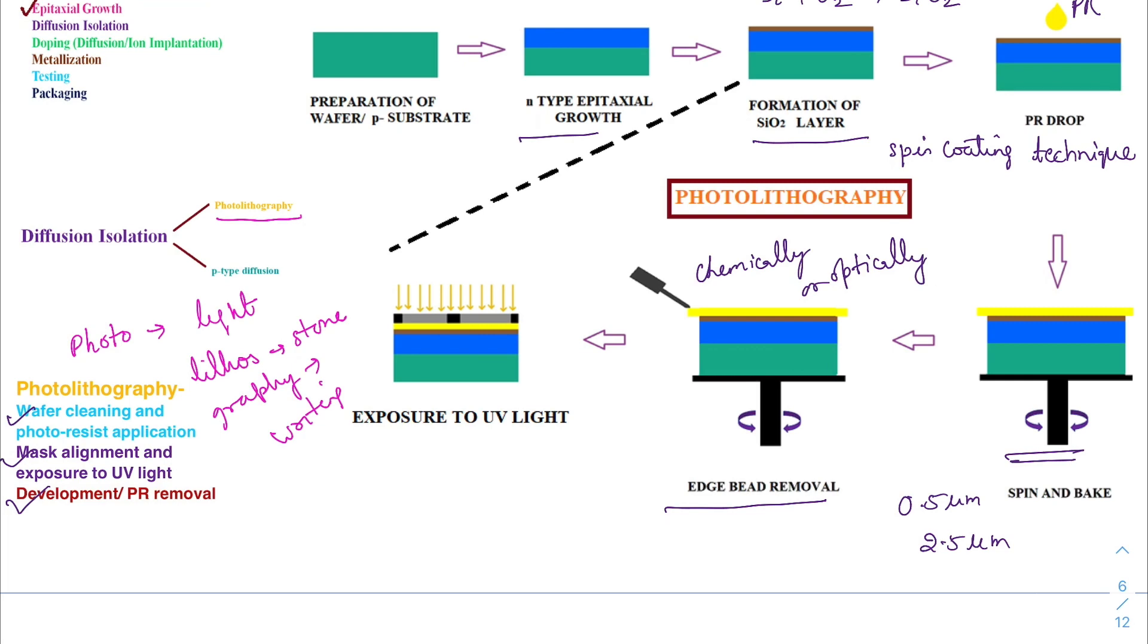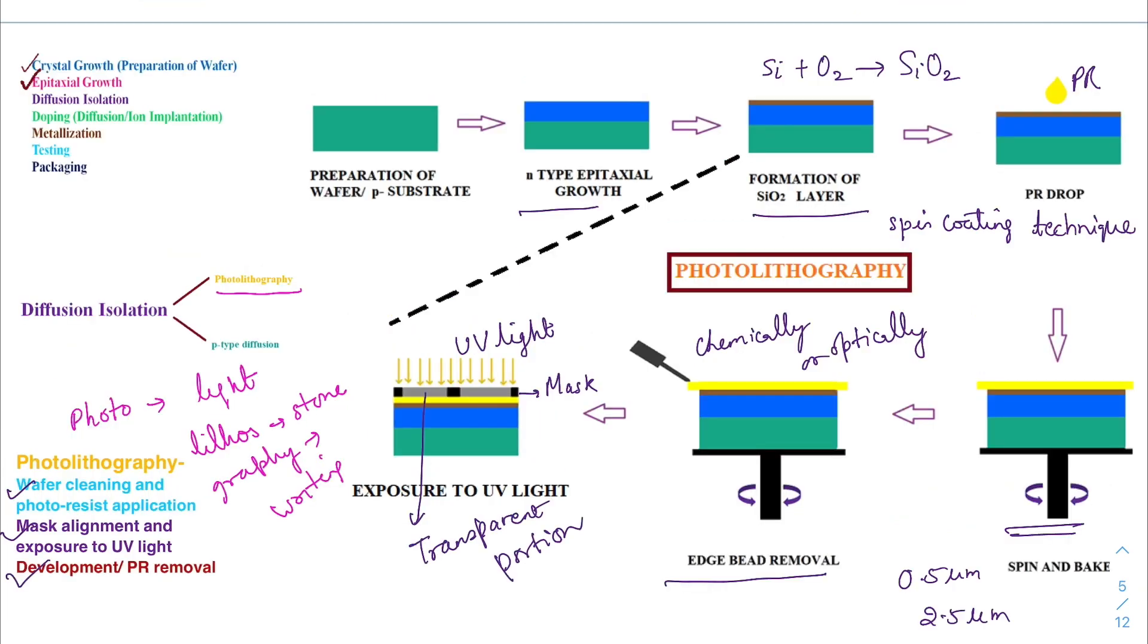The photoresist material becomes hard when exposed to UV light. A mask is then placed over the photoresist. Mask is a glass plate with a pattern drawn on it. This mask has transparent portions through which UV light can pass. The UV light which passes through the transparent portion will harden the photoresist material. But from the dark portion, the UV light will not pass through and no hardening will take place.